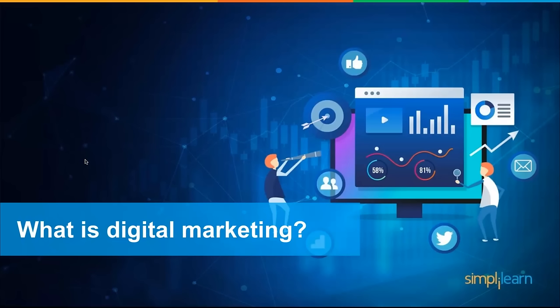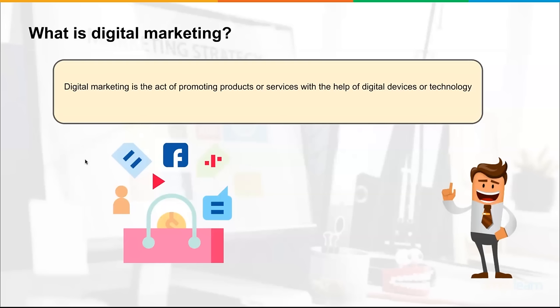Now that we've answered why digital marketing is important, let's talk about what digital marketing actually is. Digital marketing is the act of promoting a company's or individual's product or service with the help of a device or technology. When we talk about device, we're talking about a laptop or a mobile device. Technology could be an app, a cloud-based platform, or a piece of software. In a nutshell, you're using technology to promote your product or service.